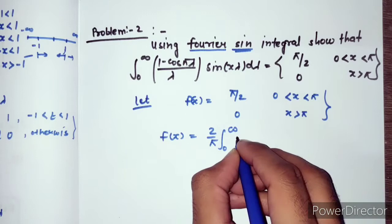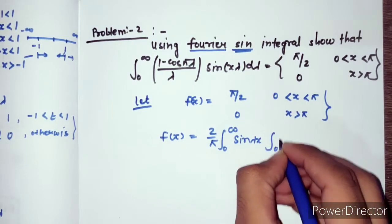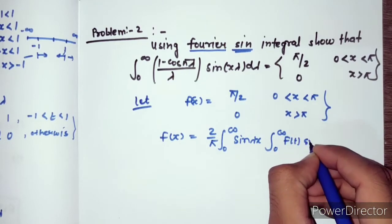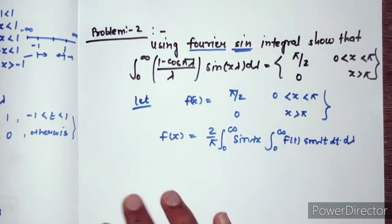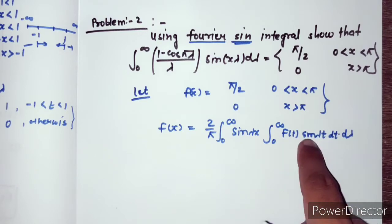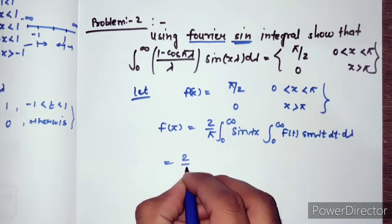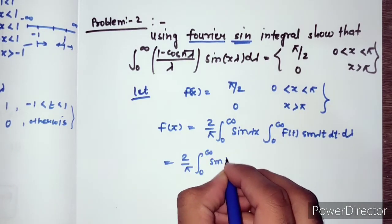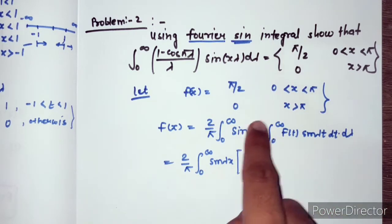By the sine formula, f(x) equals (2/π) times the integral from 0 to infinity of sin(λx) times the integral from 0 to infinity of f(t) sin(λt) dt, all times dλ. This is the function in terms of t and λ.